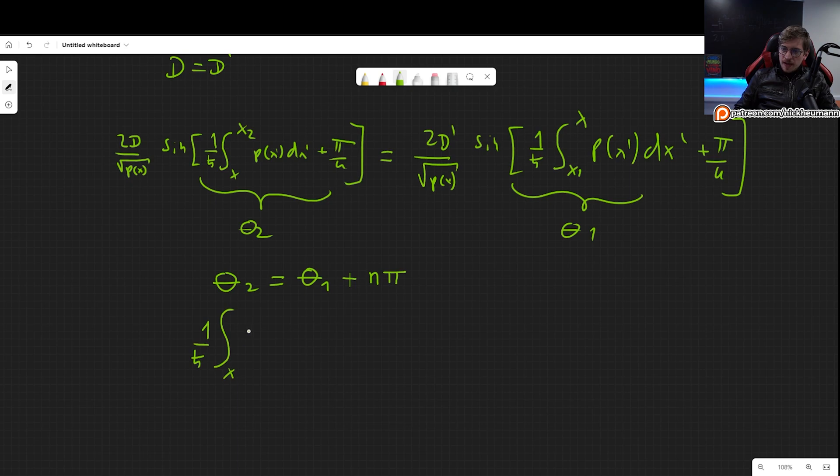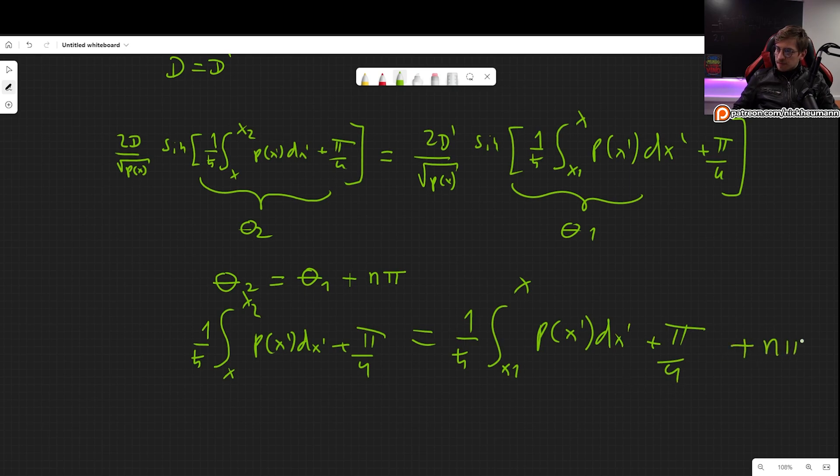This is 1 over h-bar x to x2 p of x prime dx prime plus pi over 4, this is equal to 1 over h-bar integral from x1 to x p of x prime dx prime plus pi over 4, and this of course plus n pi. So basically if you do this we will get some integral equation and it's not particularly simple.